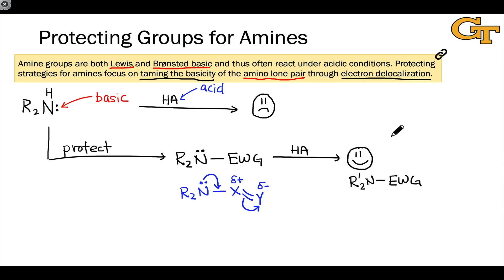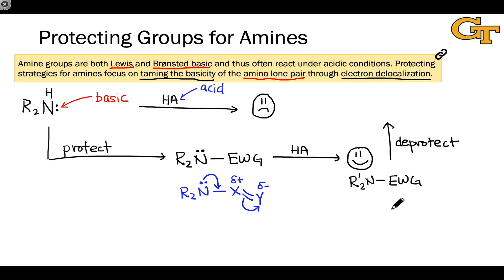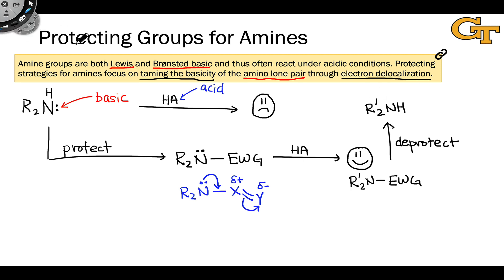Once we've done the chemistry we need to do inside the R groups, we can return the amino group to its original form through deprotection. This essentially involves substituting the electron-withdrawing group for the original hydrogen, and can be done using acidic conditions or reducing conditions that ultimately reduce the electron-withdrawing group and cause the liberation of free amine. Our final product after this sequence would be R'2NH with the H restored.